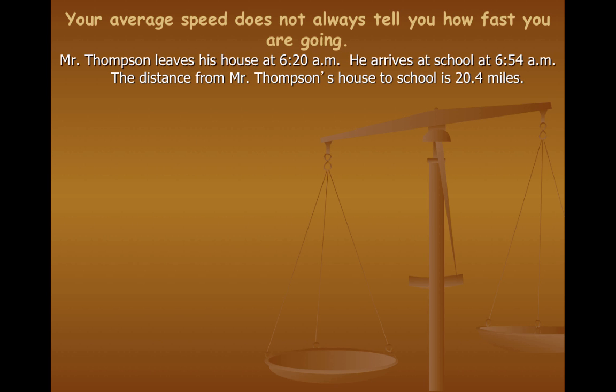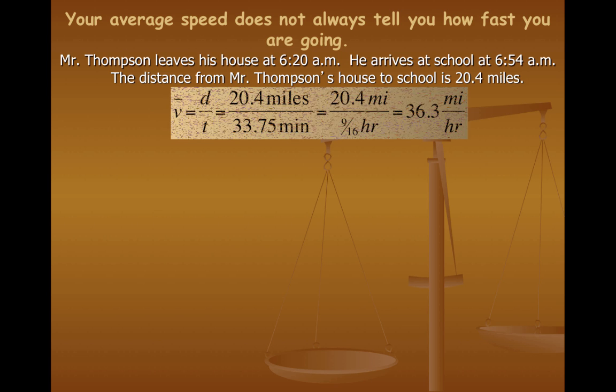I'll give you an example. When I drive to work in the morning, I usually leave at around 6:20 a.m. and when I arrive at school, it's about 6:54. So, it takes me precisely 34 minutes to get to school. Now, the distance that I have to travel is 20.4 miles. If I do the equation using v bar equals d over t, 20.4 miles divided by 33.75 minutes which reduces to 9/16 of an hour, that means that my average speed is 36.3 miles per hour.